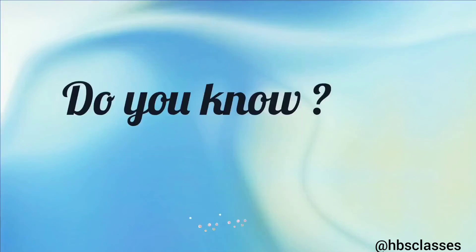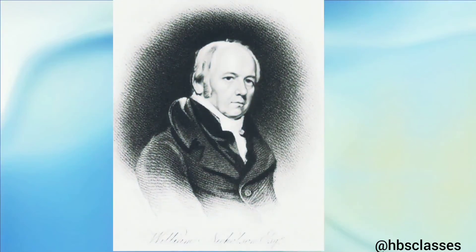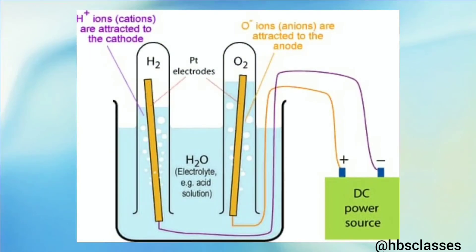In the year 1800, British chemist William Nicholson showed that if electric current is passed through acidified water, bubbles of oxygen gas and hydrogen gas are produced at the two electrodes. Oxygen gas is formed at the positive electrode — that is, the anode — which is connected to the positive terminal of the battery. Hydrogen gas is formed at the negative electrode — that is, the cathode — which is connected to the negative terminal of the battery.